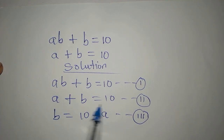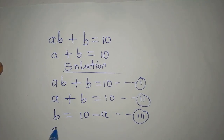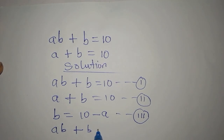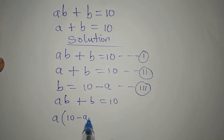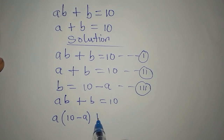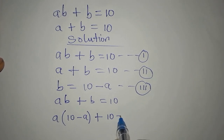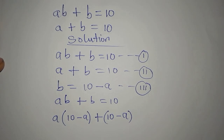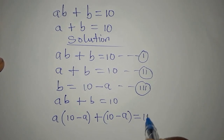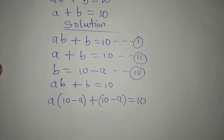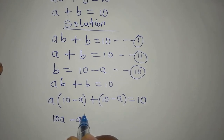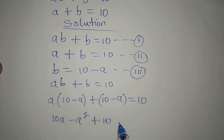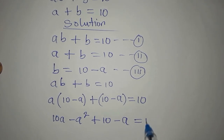We put equation 3 into equation 1, which is AB plus B equals 10. Now A is still there, but B is now 10 minus A, and the second B is also 10 minus A. Opening the bracket, we have 10A minus A squared plus 10 minus A equals 10.